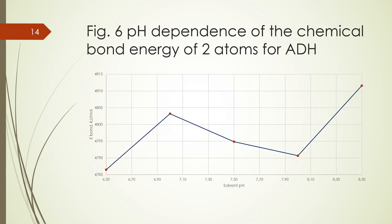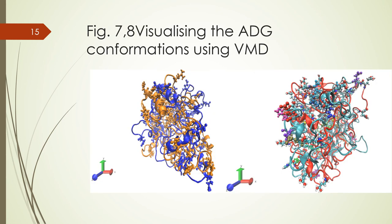Here are graphics of the pH dependence of the chemical bond energy of two atoms for ADH. As we can see, there is a minimum of energy. We observed that pH 6.5 and pH 8 correspond to the most comfortable conformations for alcohol dehydrogenase. After the molecular dynamics calculations, we visualized these conformations using VMD.